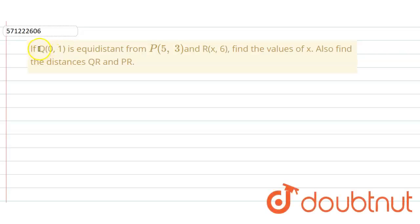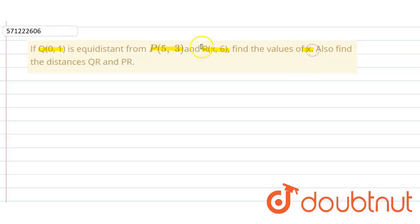In the given question, point Q(0,1) is equidistant from point P whose coordinate is (5,3), and the coordinate of R is (x,6). We have to find the value of x, and also find the distance QR and PR.